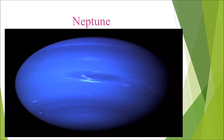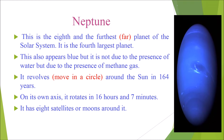Next, let's see about Neptune. Neptune is the 8th and furthest planet of the solar system. It is the 4th largest planet. It also appears blue, but not due to the presence of water — rather due to the presence of methane gas. It revolves around the sun in 164 years, and on its own axis it rotates in 16 hours and 7 minutes. It has 8 satellites or moons around it.